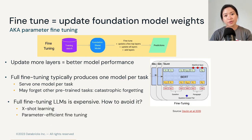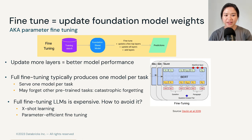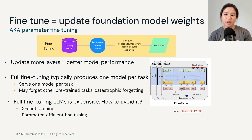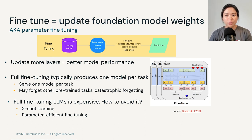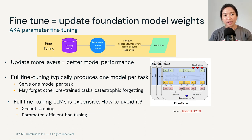So full fine-tuning is expensive. How do we avoid doing it? There are two methods: one is few-shot learning, and the other is parameter-efficient fine-tuning. Before we go to parameter-efficient fine-tuning, which we often abbreviate as PEFT, we'll briefly look at what few-shot learning is.